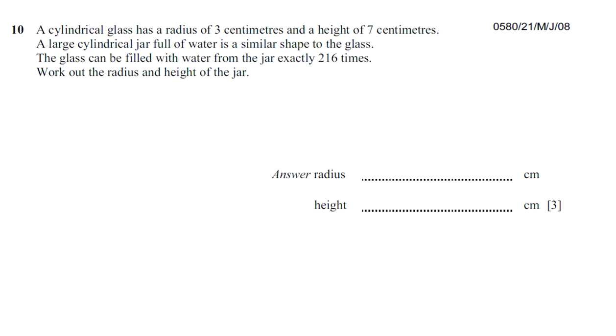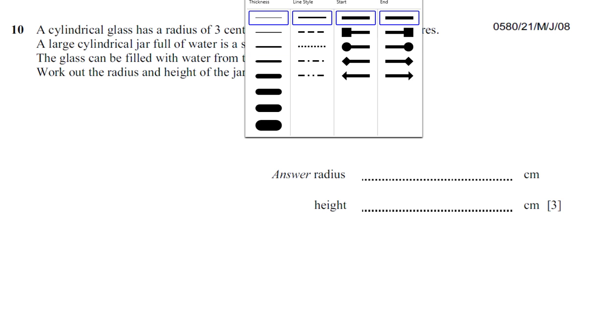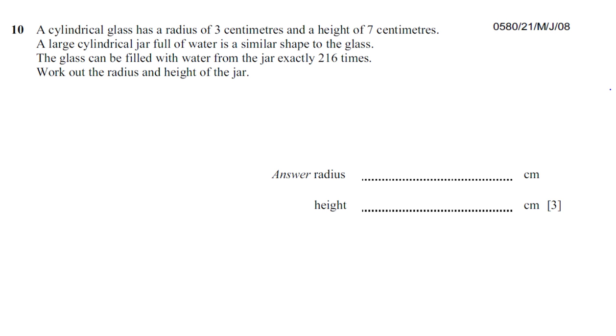Question about similarity and volume. We're told that a cylindrical glass has a radius of 3 cm and a height of 7 cm. A large cylindrical jar full of water is similar in shape to the glass.